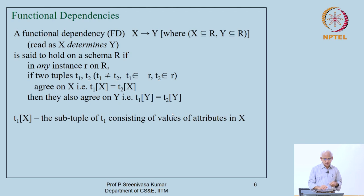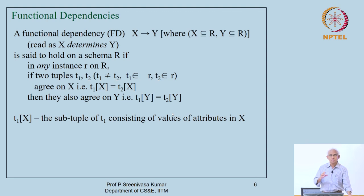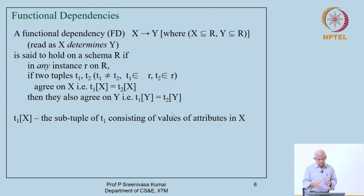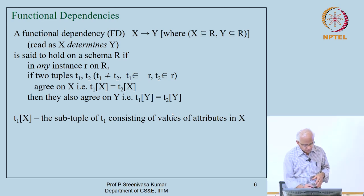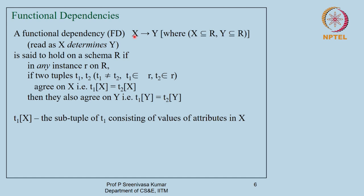Let us continue our discussion on normal forms. In the last lecture, we saw the definition of functional dependencies. Let me briefly recall this important definition because we are going to spend considerable amount of time understanding this notion. It basically says that one set of attributes is functionally dependent on X, meaning it is a function of X. The value of these attributes would uniquely determine the values of those attributes.